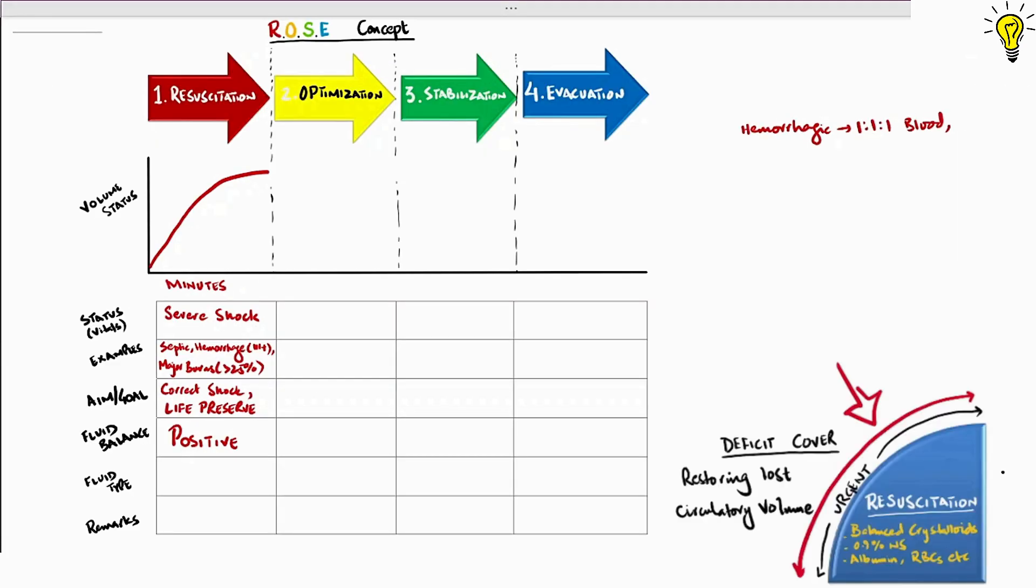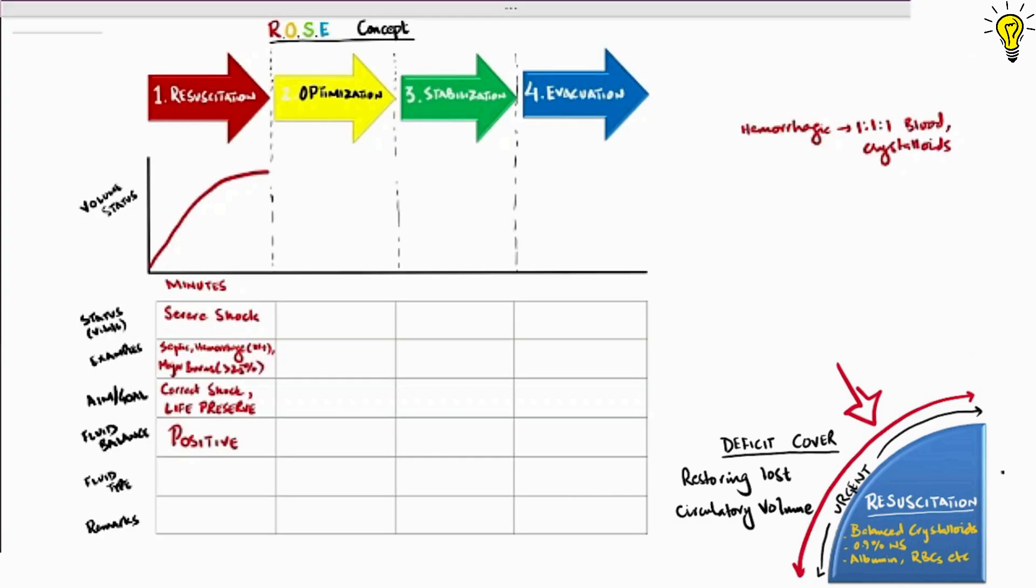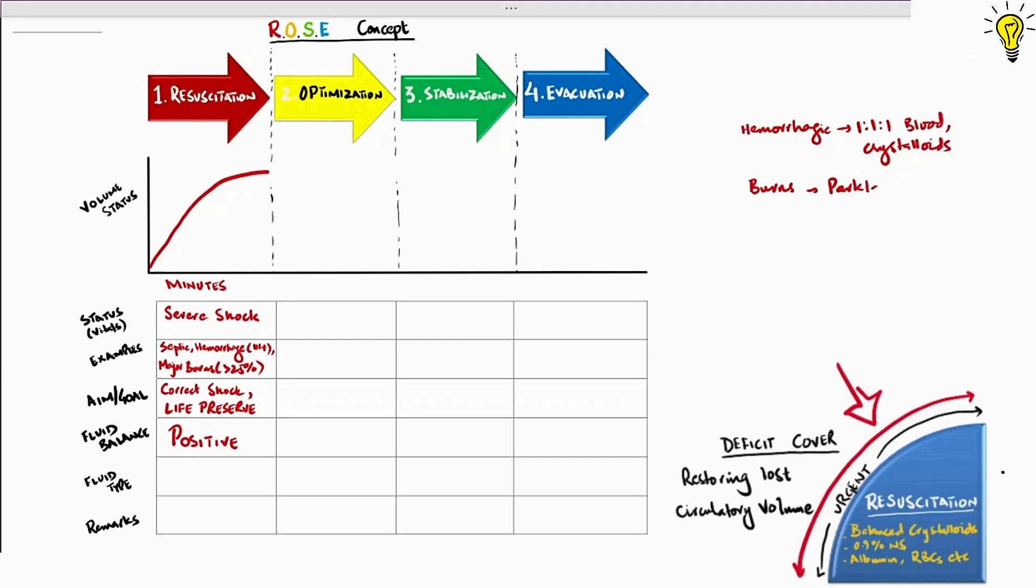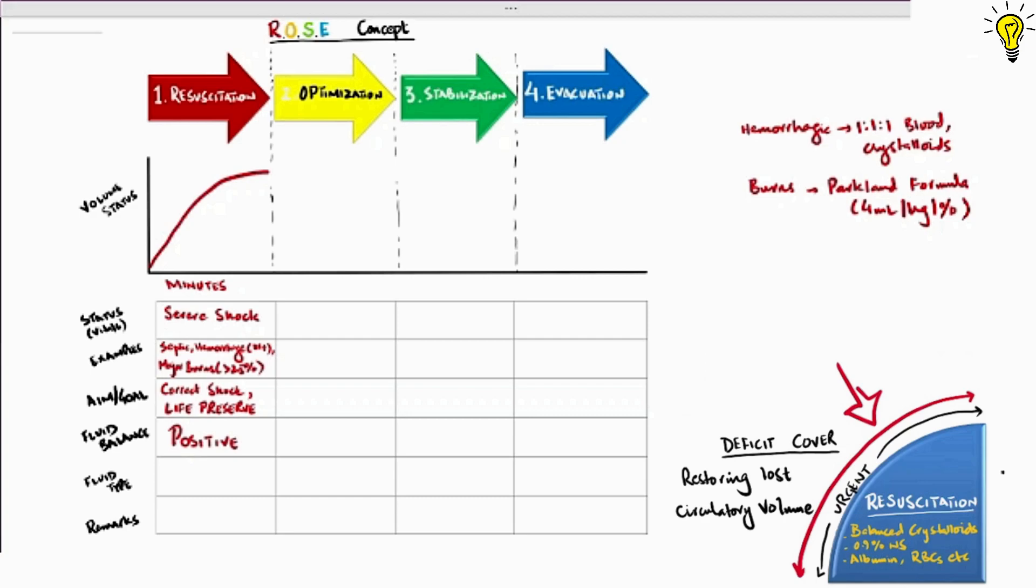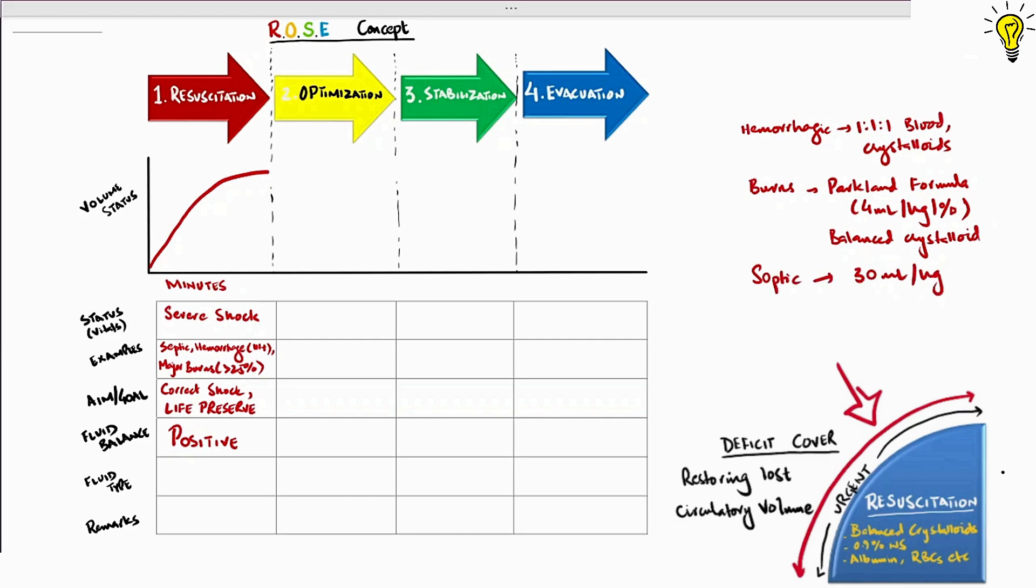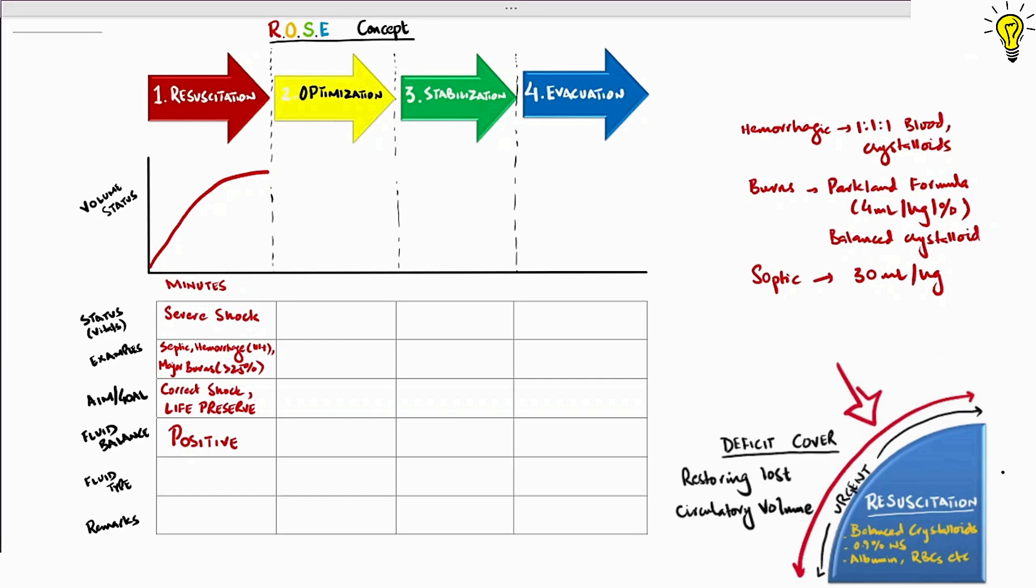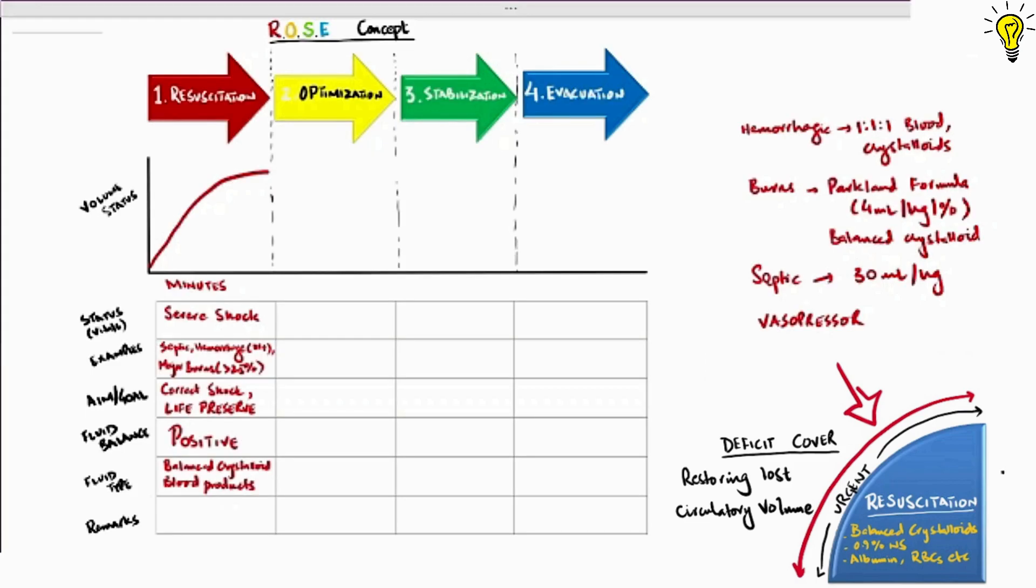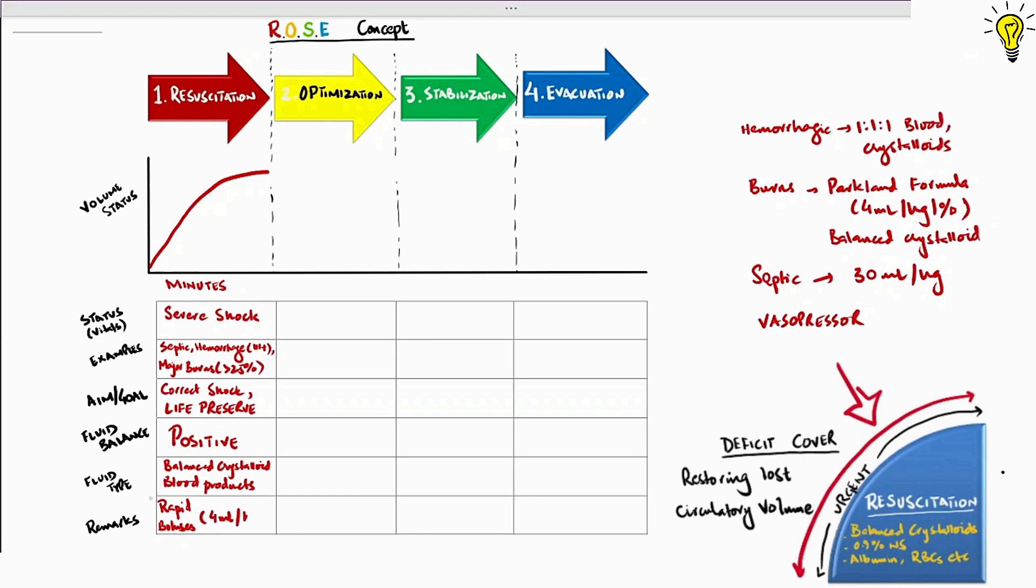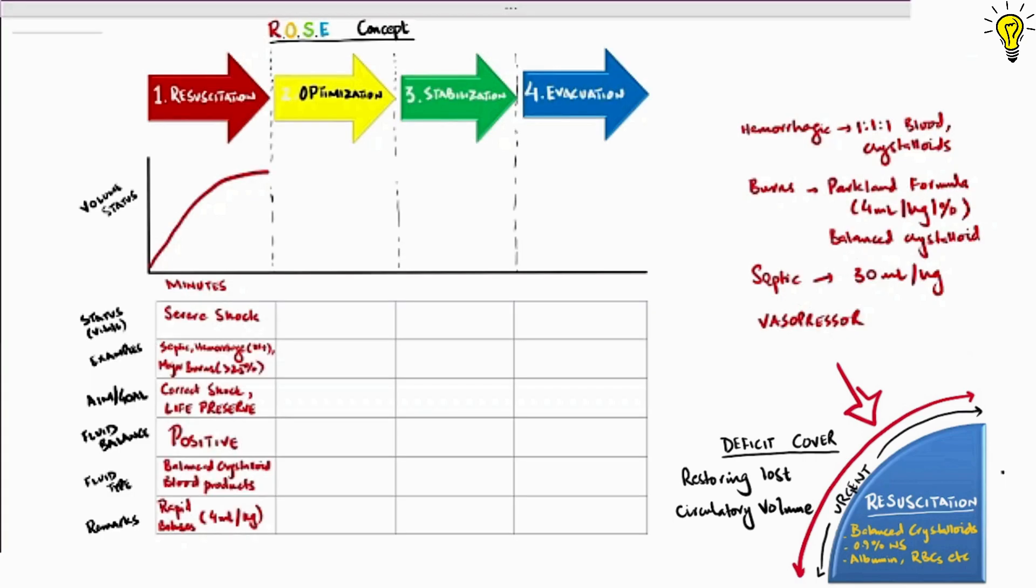Individualization is important alongside the latest protocols. For example, grade 3 hemorrhage requires damage control resuscitation with red cell concentrates, platelets and FFPs at 1:1:1 ratio. If it's burn shock, it requires Parkland's formula of 4 ml per kg per percentage burn, half given in the first 8 hours and half in the next 16 hours.